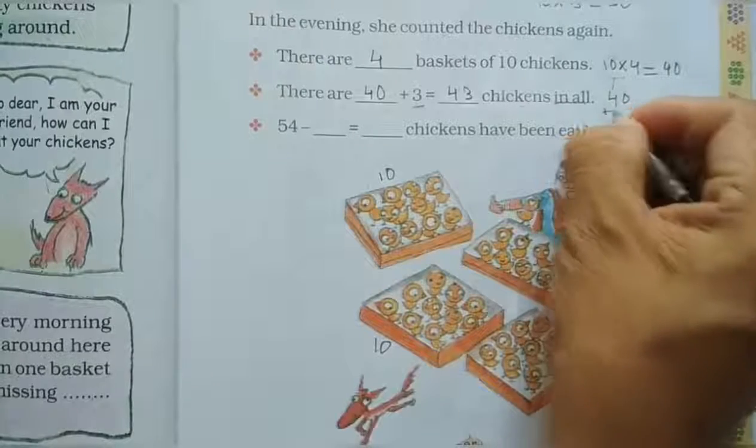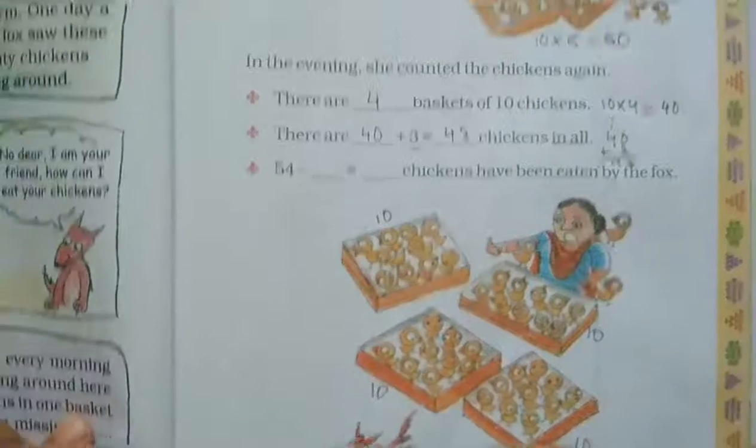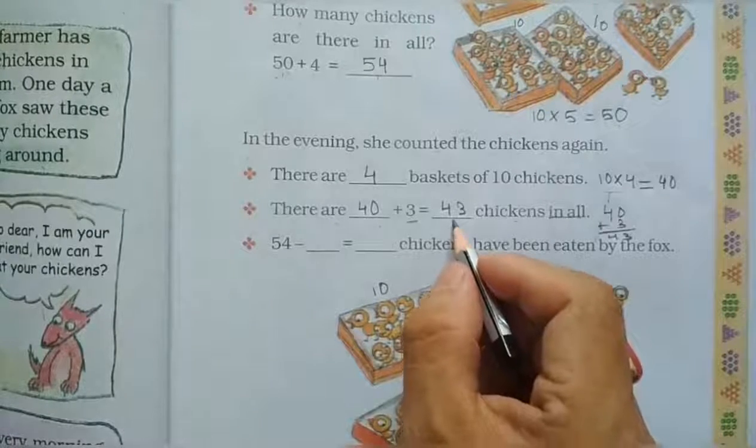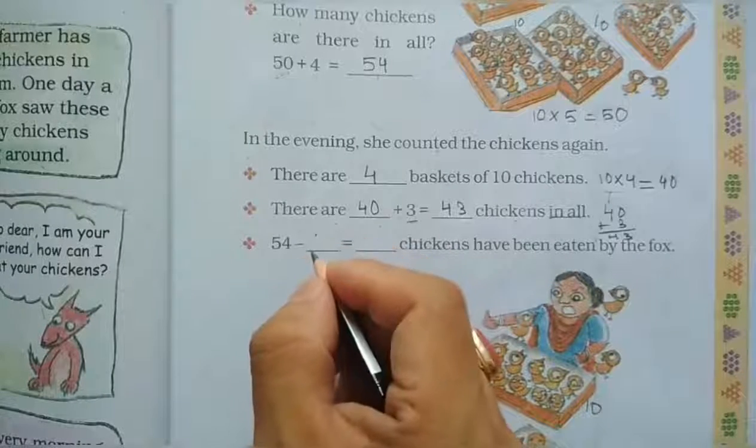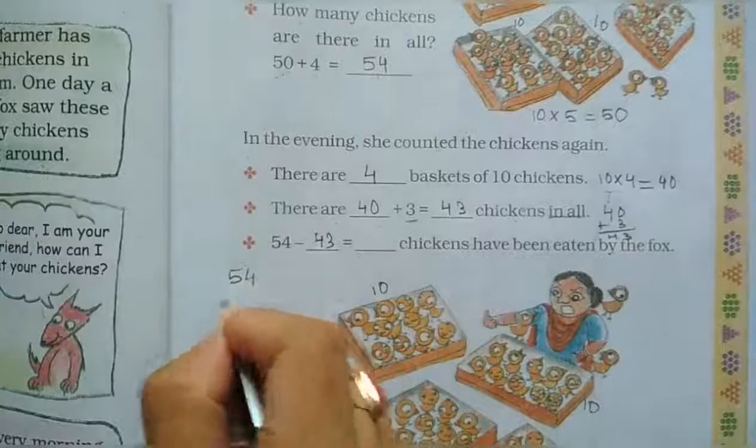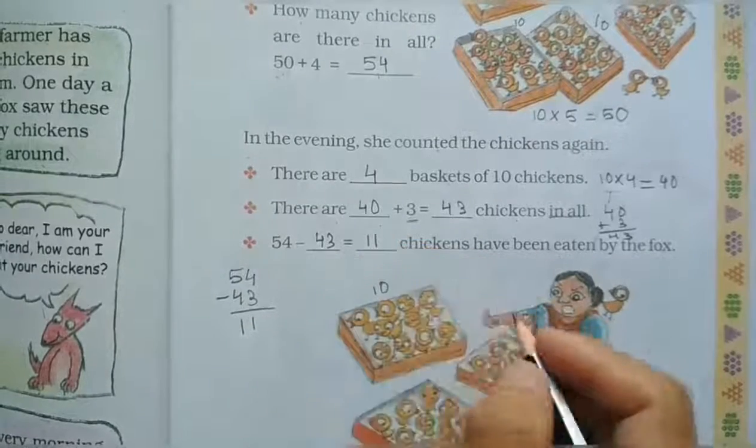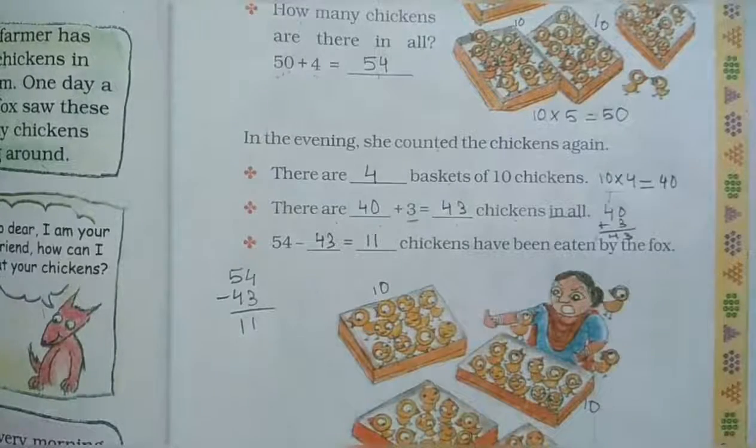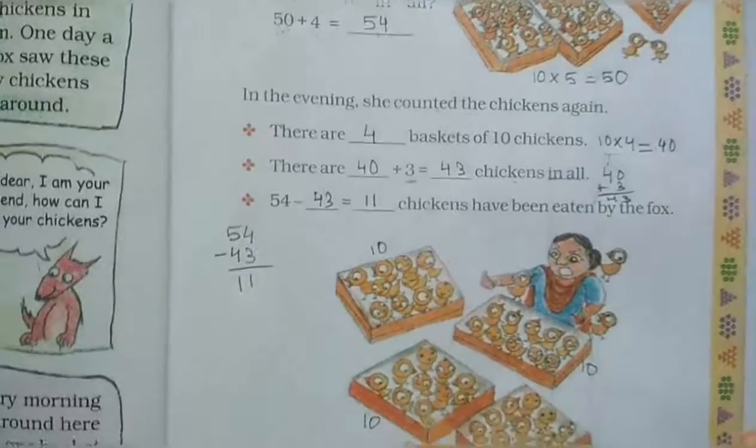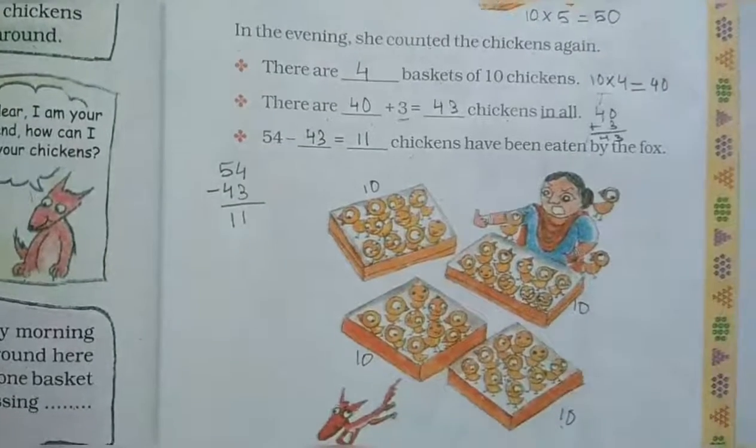In the morning the count is 54. In the evening the count is 43. So 54 minus 43 equals 11. Eleven chickens have been eaten by the fox.